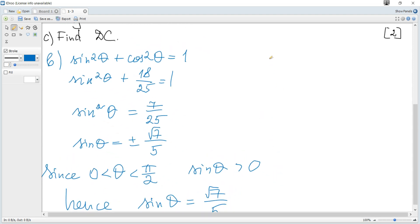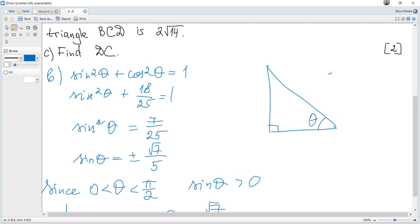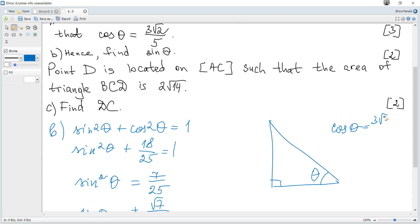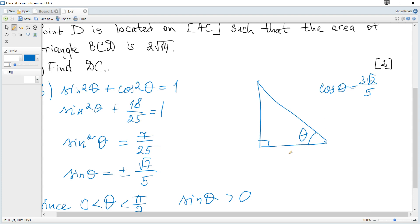Another method: we can consider a right angle triangle where one angle is theta, and it is given that cosine of theta is 3 times root 2 over 5. Cosine is adjacent over hypotenuse.